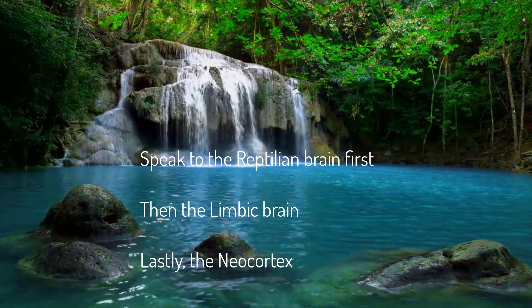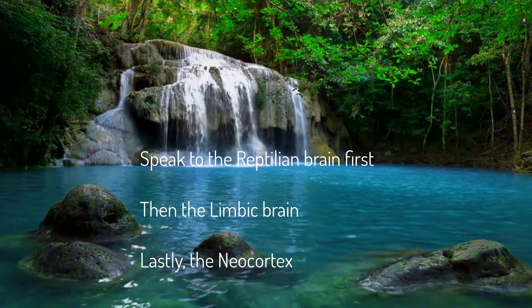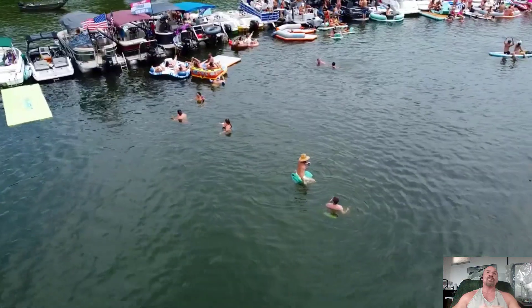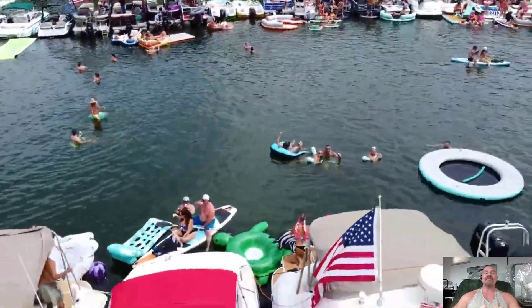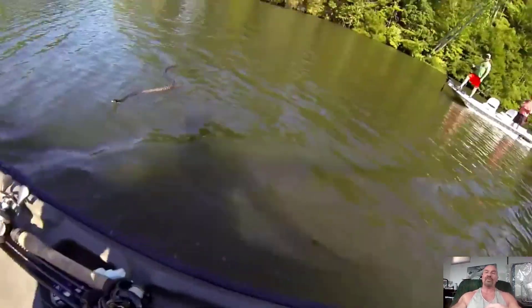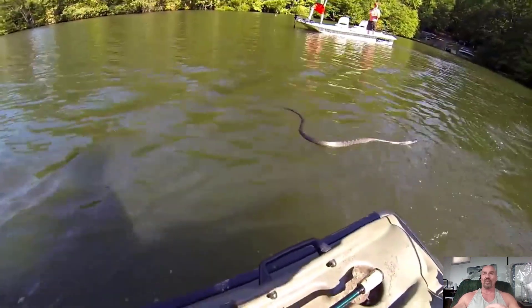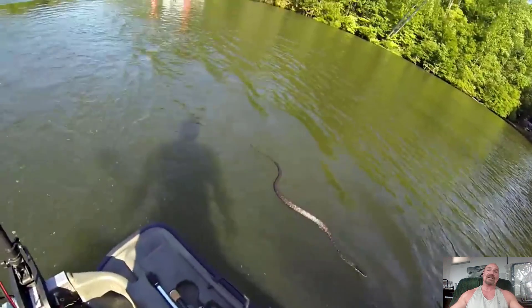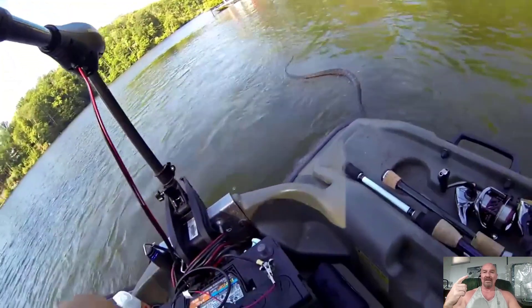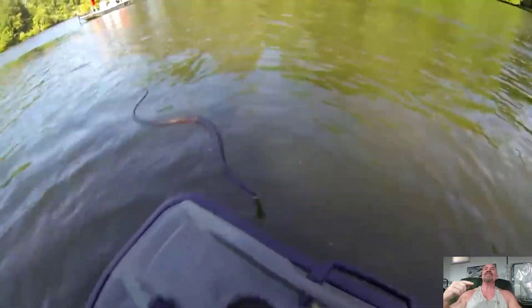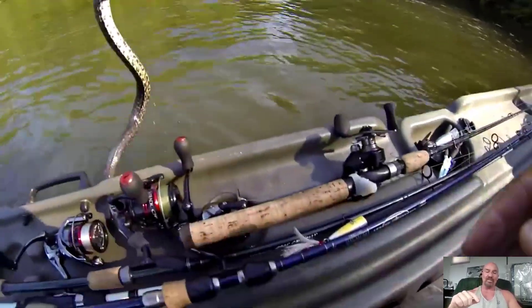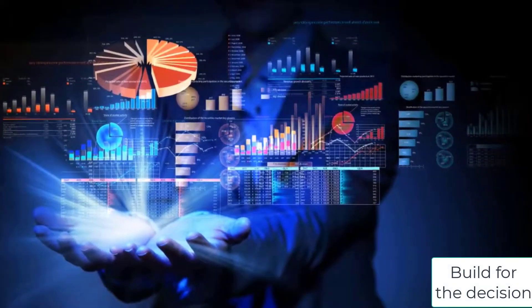This brain can make survival decisions before you or the other brains can even begin to process the data. I know this for a fact. We were out at the lake — I was floating on the raft talking with friends and family — when I felt something brush my leg. Before I could look and see, I had reached down, grabbed, and thrown a four-foot water snake at least 30 feet across the water. I literally grabbed and threw a snake before my neocortex could even register that I had a snake on my lap. That's the reptilian brain.